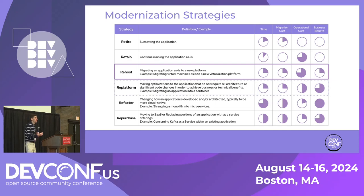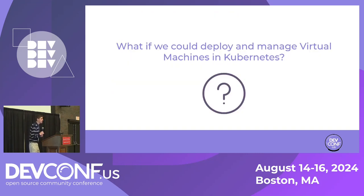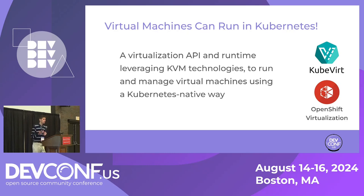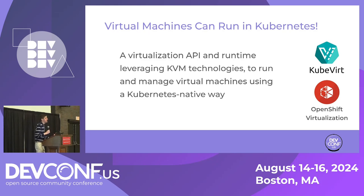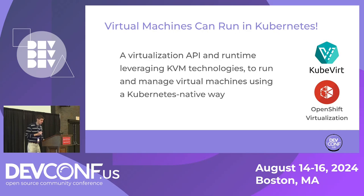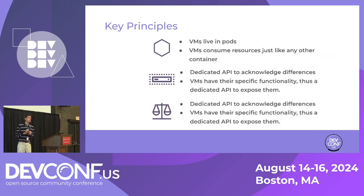It really comes down to a modernization strategy. Different organizations are going through different paths. If you want to use new technology and work faster while avoiding a full migration, re-hosting is an option — taking what you're currently running and putting it in a new pattern, a new paradigm. What if we could deploy and manage virtual machines inside Kubernetes? That's the combination. Through KubeVirt upstream and OpenShift Virtualization from Red Hat, it provides a virtualization API and runtime leveraging KVM technologies.